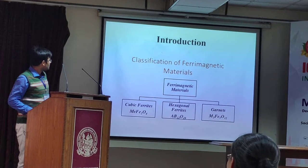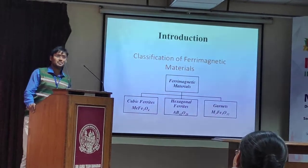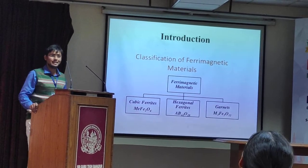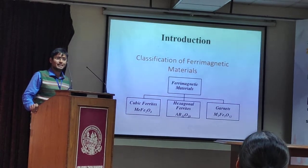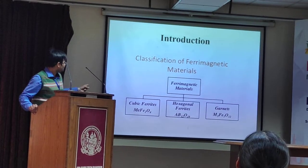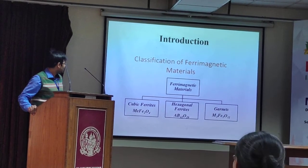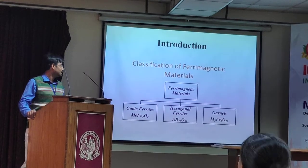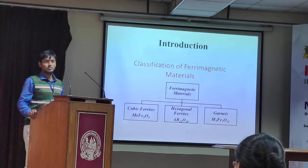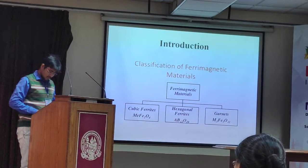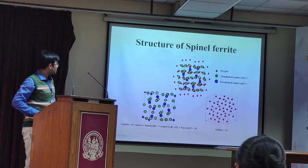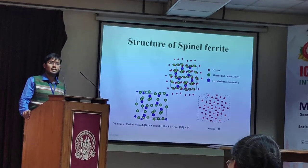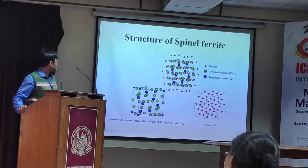First, the introduction. KCM has already discussed many things about ferrite, but I have done a little work on ferrite. Ferrites are classified as: cubic, hexagonal, garnet, and perovskite. My work is on spinel ferrite, so I would like to explain something about spinel ferrite.